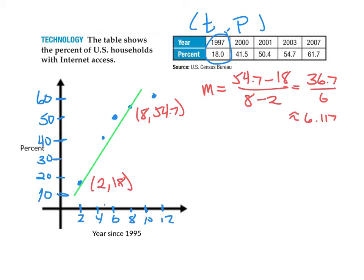In order to do that, I'm going to use my point from 2, 18 and, of course, the slope that we just had. And go y minus the y-coordinate is equal to slope, 6.117, times x minus the x-coordinate, 2.